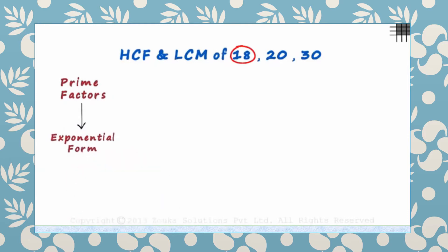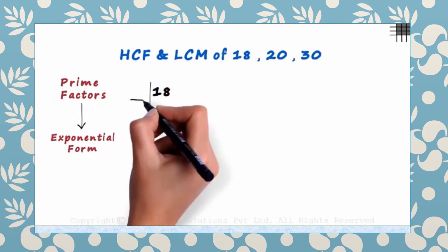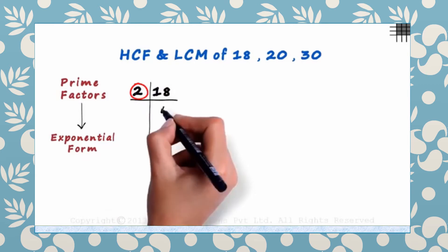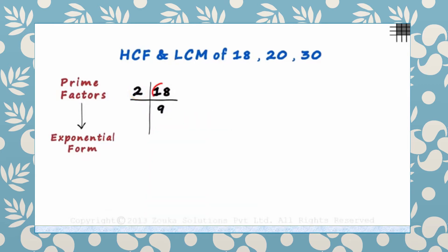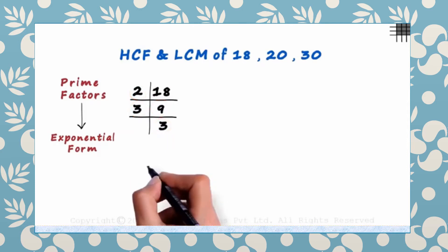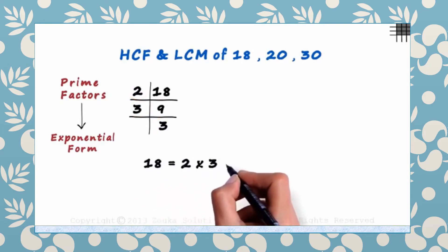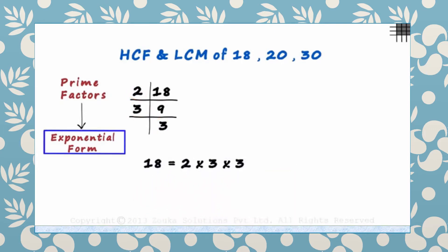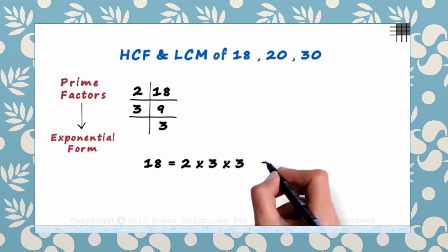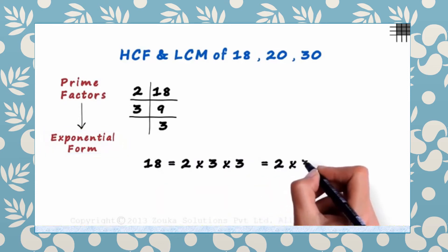Let's reduce 18 to its prime factors first. It is divisible by 2 — 2 times 9 is 18. And 3 times 3 is 9. So 18 can be written as a product of 2 times 3 times 3. In exponential form, it can be written as 2 multiplied by 3 squared.